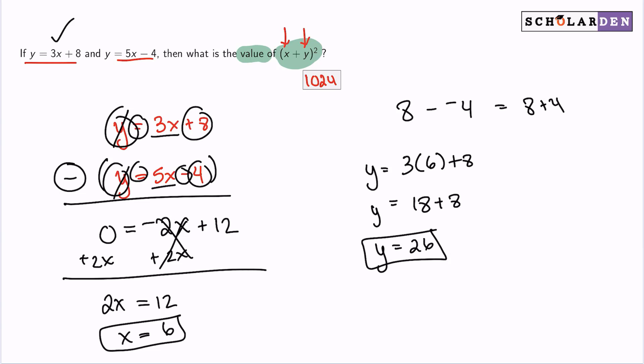So we found our x and found our y. We've achieved our goal. Now we need to use this information to find the answer. So it said x plus y squared. Let's go ahead and grab that right there. x plus y squared is equal to 6 plus 26 squared. From there, 6 plus 26 is 32, and 32 squared is 1024.